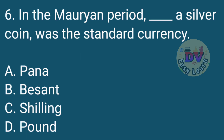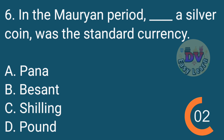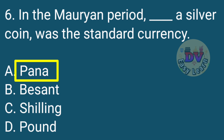Question No. 6: In the Mauryan period, Panna, a silver coin, was the standard currency. Correct answer: Panna.